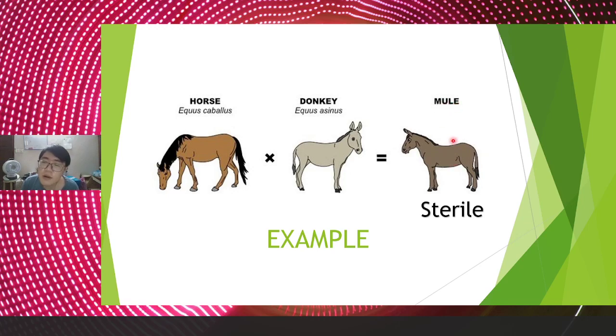Because the mule cannot reproduce and produce another species, it is sterile. Therefore, from the biological species definition, a mule cannot be considered a species, and horse and donkey are totally different species.